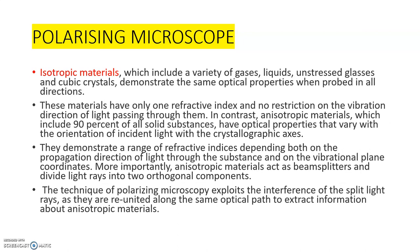Isotropic materials, which include a variety of gases, liquids, unstressed glasses, and cubic crystals, demonstrate the same optical properties when probed in all directions, with no restriction on the vibration direction of light passing through them. In contrast, anisotropic materials, which include 90% of all solid substances, have optical properties that vary with the orientation of incident light and along each molecular and crystallographic axis.